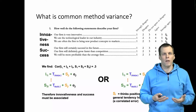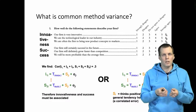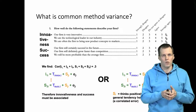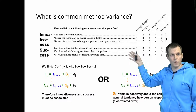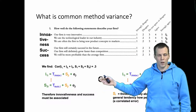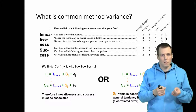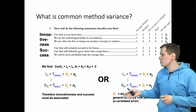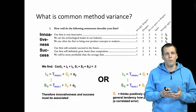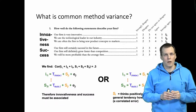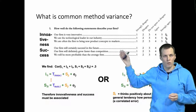The idea of common method variance is that correlations between our measures are driven by the measurement instrument or measurement process instead of being driven by correlations between the constructs. In our hypothetical example we have three measures of company innovativeness, three survey measures, and three measures of company success, and we find that the scale score of innovativeness and scale score of success correlate at 0.3. Does that mean the constructs are correlated, or do the indicators simply measure how positively the person thinks about the company, or how commonly the person responds to the right-hand versus left-hand side of a scale? This is the method variance.